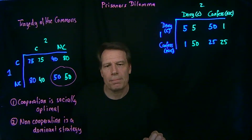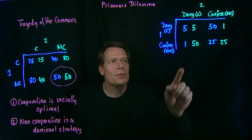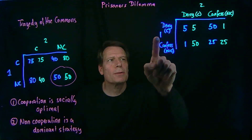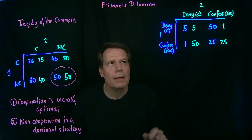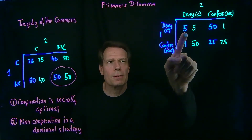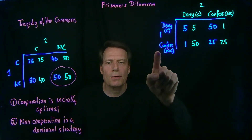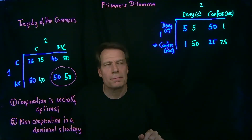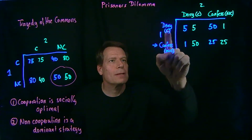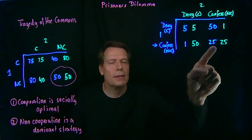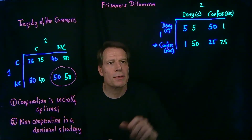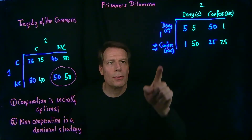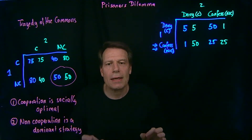So now we can look at the incentives in this game. It's a little confusing at first, because here higher numbers are actually worse — they're years in prison. With that in mind, suppose you're prisoner 1 and you think your partner is going to deny. Then you could get 5 years in jail if you deny, or only 1 year in jail if you confess. So, you should confess. What if you think prisoner 2 is going to confess? Then you have a choice between denying and getting 50 years in jail, or confessing and only getting 25 years in jail. So again, your incentive is to confess. No matter what you think your partner is going to do, your incentive is to confess. Confessing is a dominant strategy.